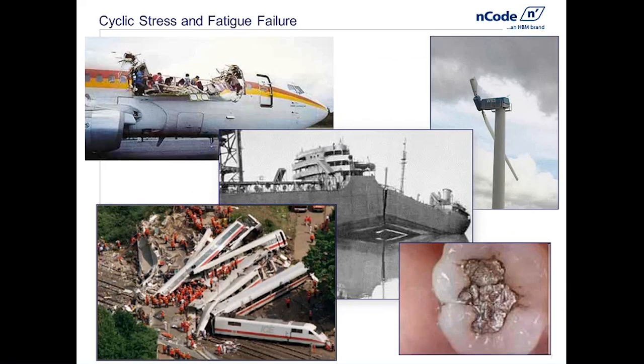Now that we understand what powertrain components we're talking about, let's think for a second about fatigue. In a fatigue sense, failure comes from an accumulation of fatigue cycles — an accumulation of stress cycles. Varying stresses over time create what we call cycles, and if enough of those happen, we can have fatigue failure.